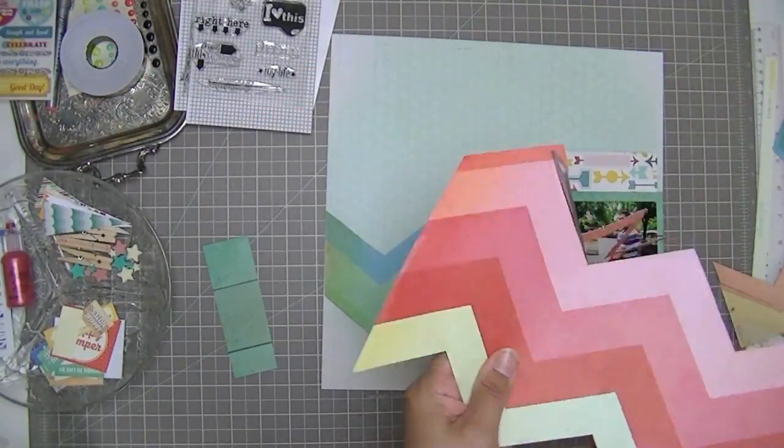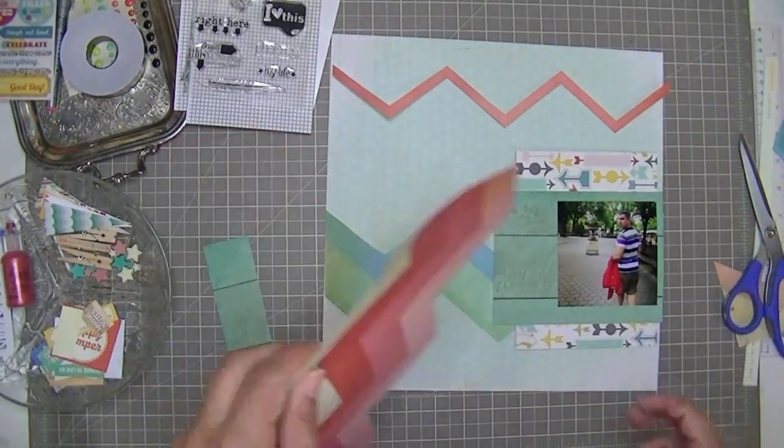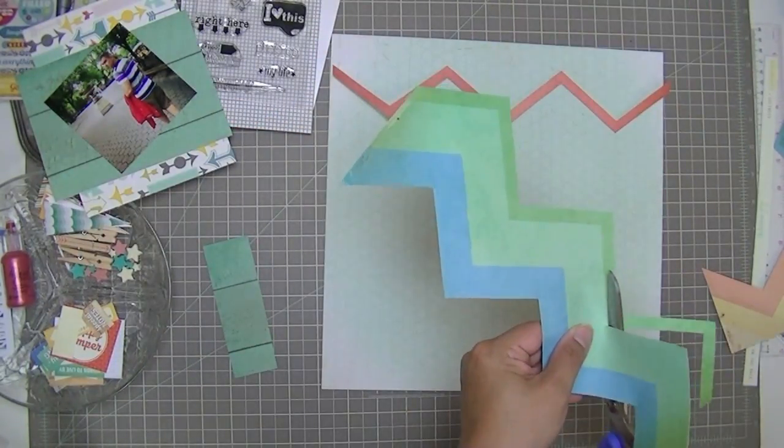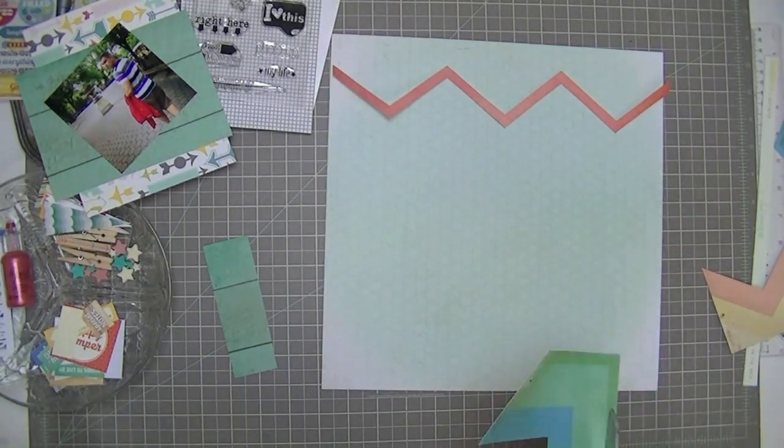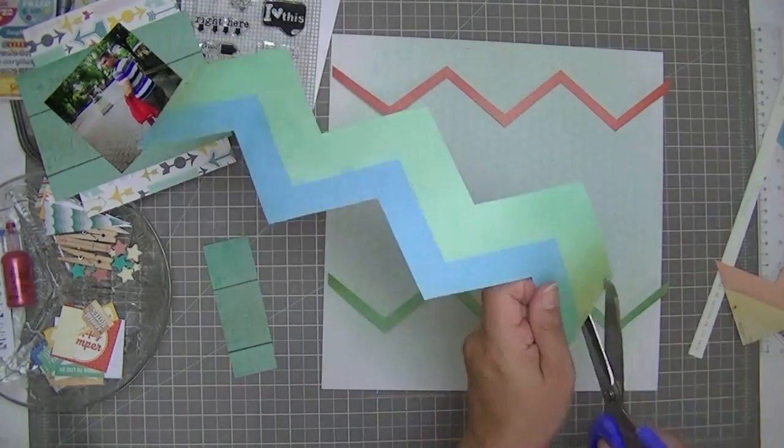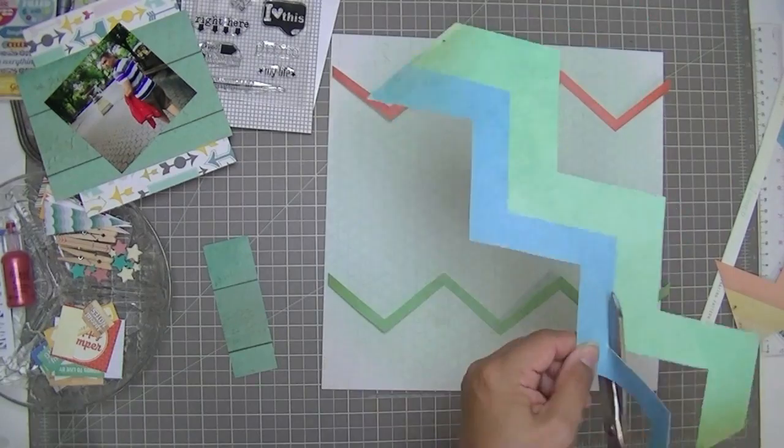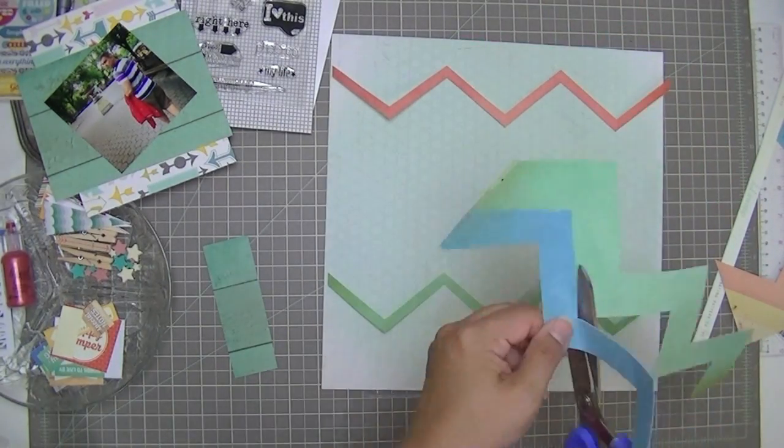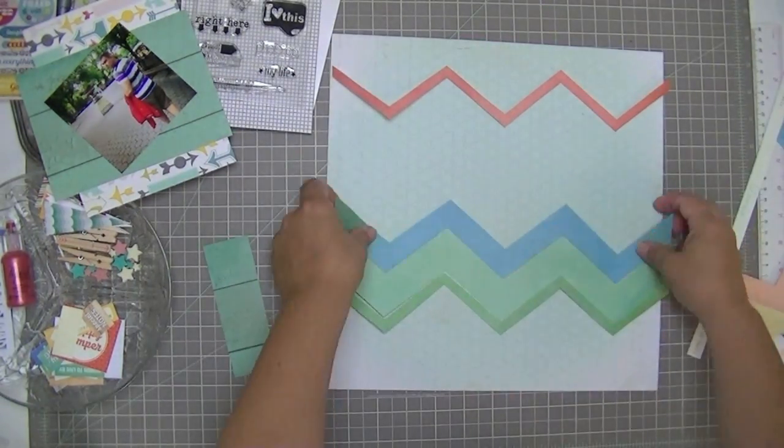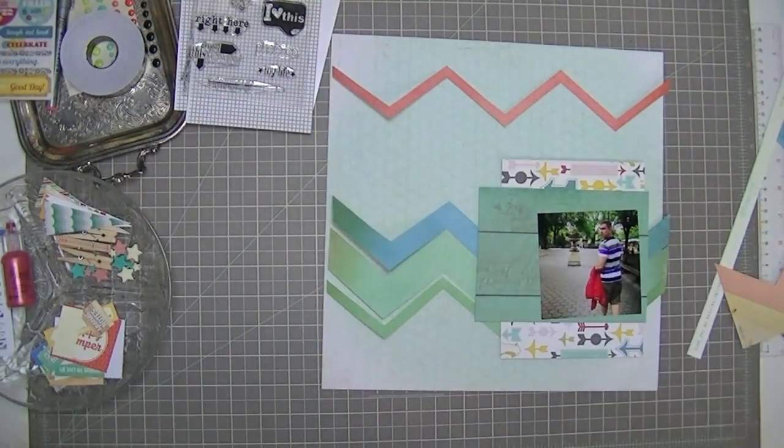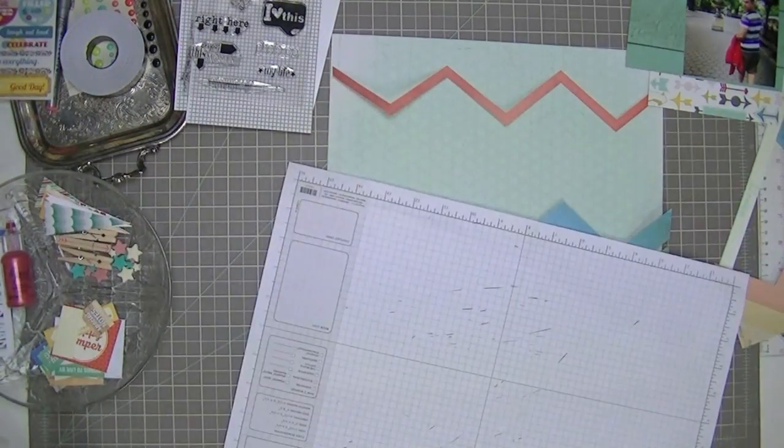I guess you could call it salmon. We'll call it salmon since it's a layout about my husband. And now I've decided to cut apart these other chevrons. I'm going to put a tiny bit of space in between them on my layout. Eventually, for right now I don't have that space there.